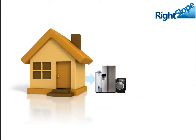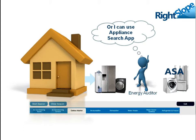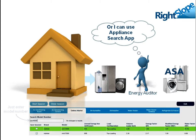Our approach is to use Wright Slope's Appliance Search app for this process. The Appliance Search app — ASA — is an all-in-one application where, by appliance, you just enter the model number and you are given the annual energy usage, the energy factor, the size, and the age of the appliance.